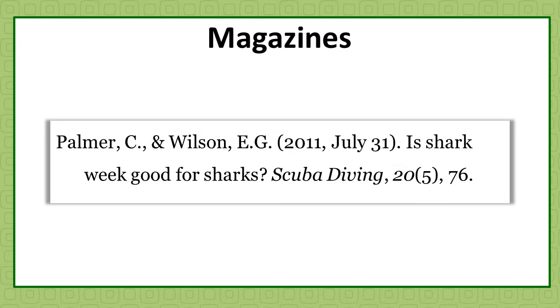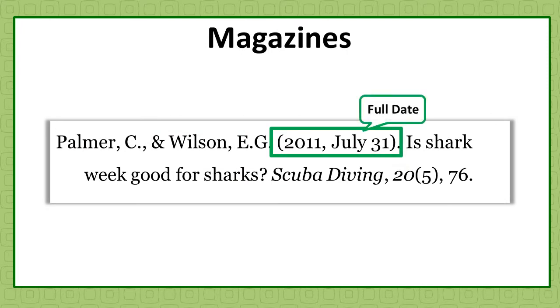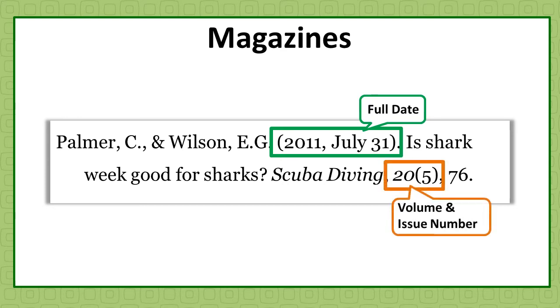Unlike academic journals, magazines may use a full-date publication including year, month, and day. Some magazines have volume and issue numbers like academic journals.